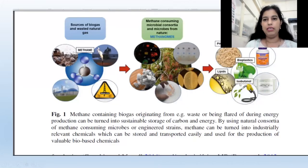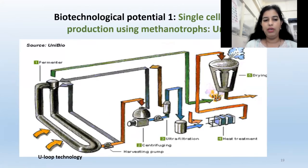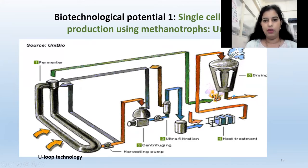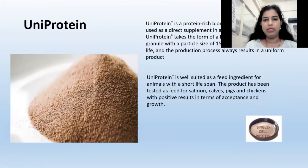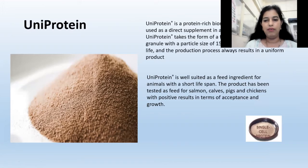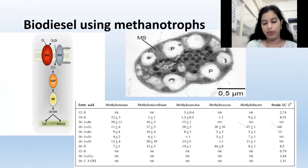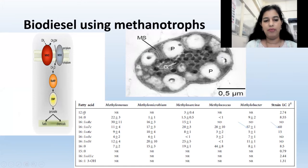Methanotrophs can be used for production of various important chemicals such as lipids, bioplastics, biodiesel, and so on. Uniprotein is one successful example where methanotrophs were used in a U-loop reactor to produce uniprotein — a protein consumed by various animals and very well-suited for them. This technology was developed in Denmark and has been used since the 1990s. It is a very successful example of converting natural gas to protein using methanotrophs. Additionally, the cell walls and cell membranes of methanotrophs contain fatty acids which can be used as biodiesel.